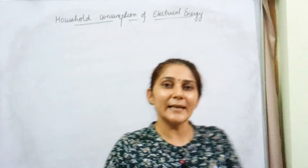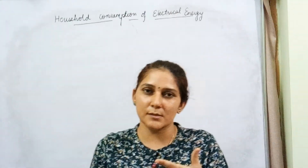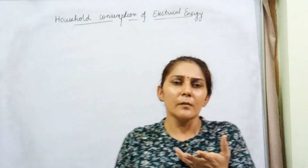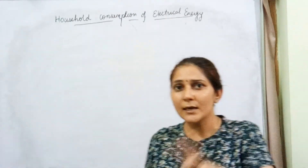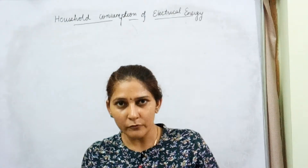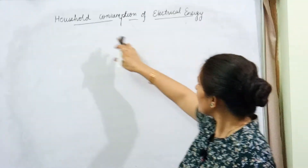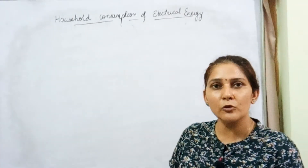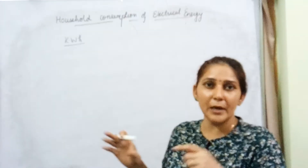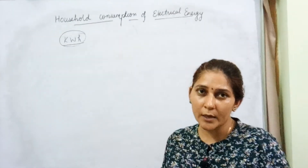Now we come to: how much electrical energy are we consuming over a period of time in our household? If we want to calculate how much energy we have consumed — because we have to pay the electricity bill — how can we calculate the units consumed? This energy is calculated in a unit known as kilowatt-hour. The electricity meter installed at your home reads the consumption in kilowatt-hours.